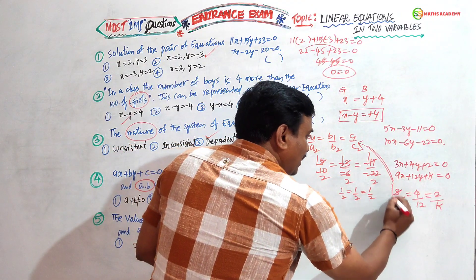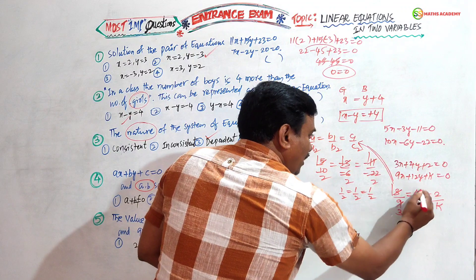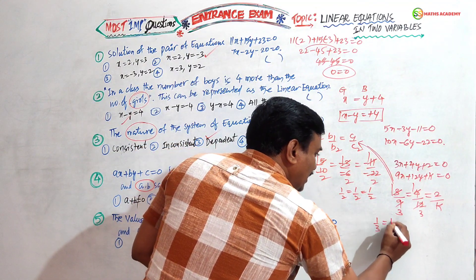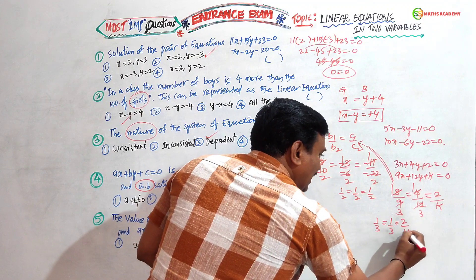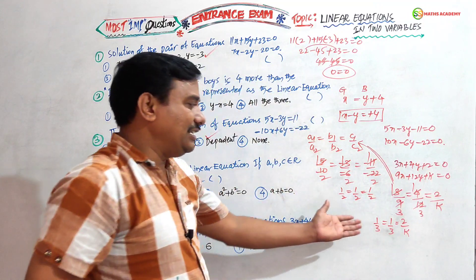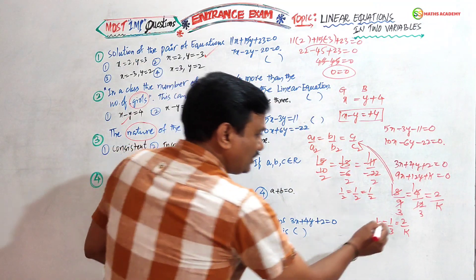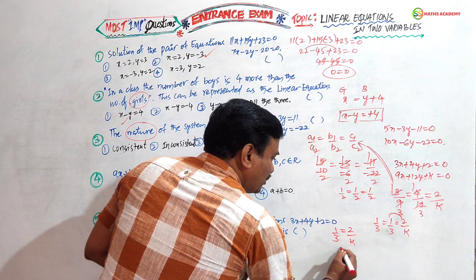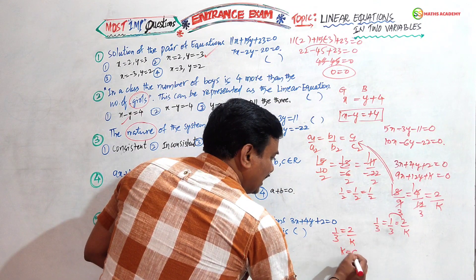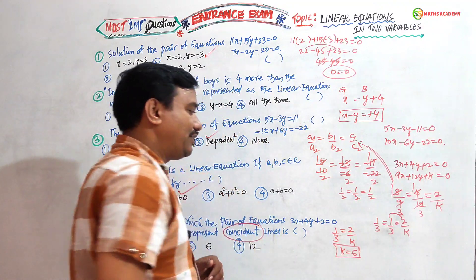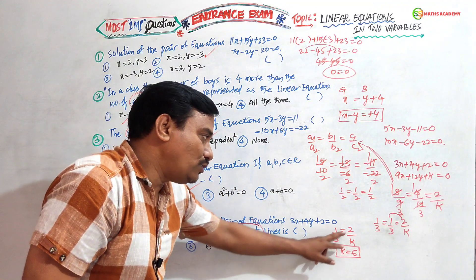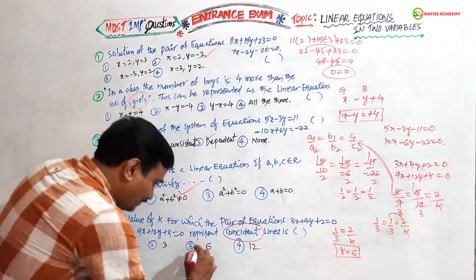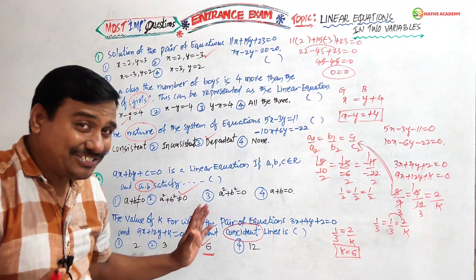Simplifying: 3/9 = 1/3, 4/12 = 1/3, so 2/k must also equal 1/3. Taking the first two equal to 2/k: 1/3 = 2/k. Cross multiplication gives k = 6. So k equals 6.